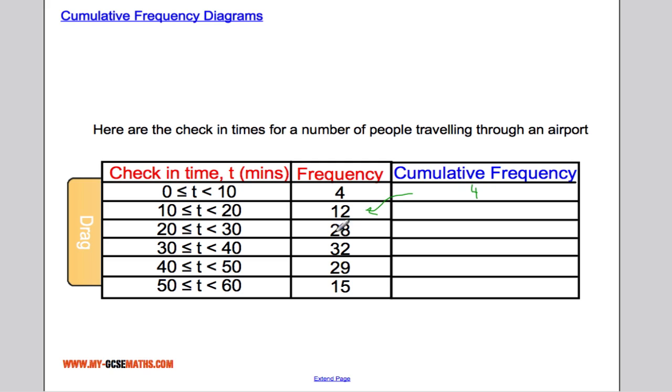So 4 and 12 is 16, and continuing with the same idea all the way along: 16 and 28 gives me 44, 44 and 32 gives me 76, add 29 to that and we get 105, and adding 105 to 15 I get 120.